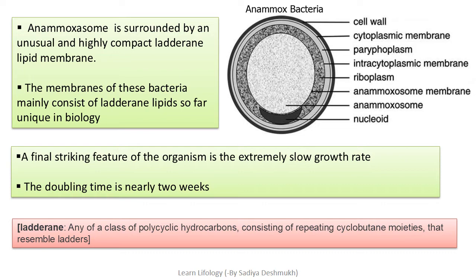A final striking feature of anammox organisms is their extremely slow growth rate. The doubling time is nearly two weeks, meaning it takes approximately two weeks for the population to double.